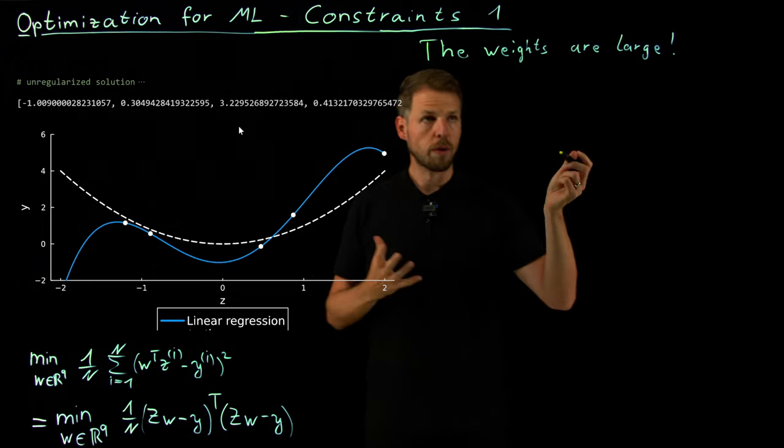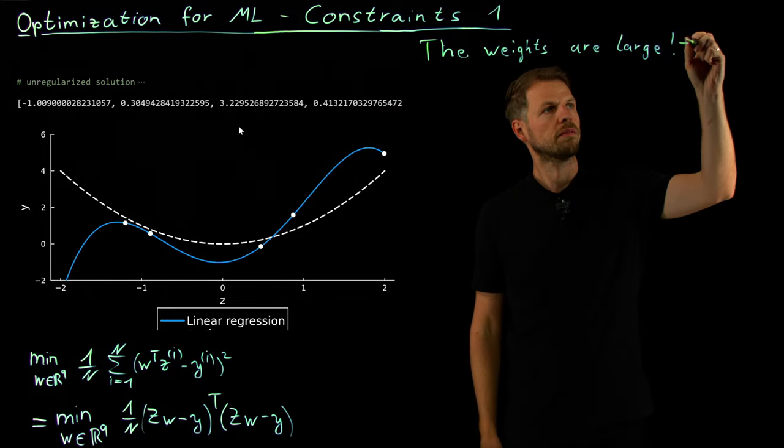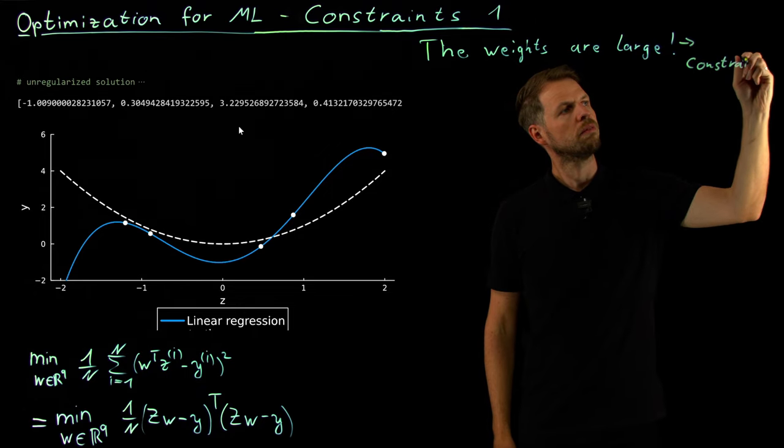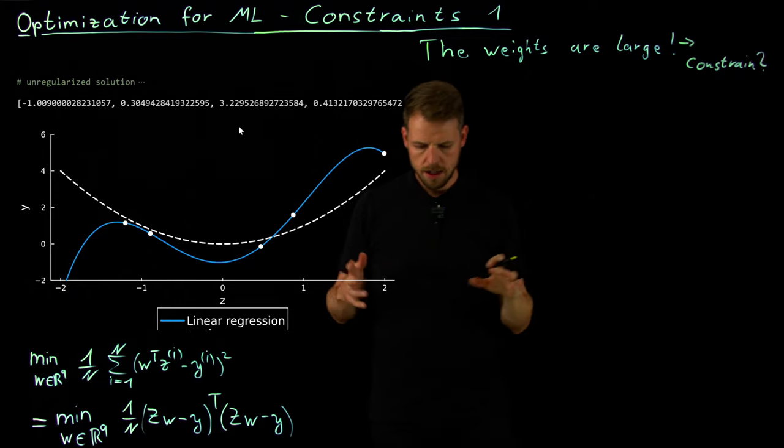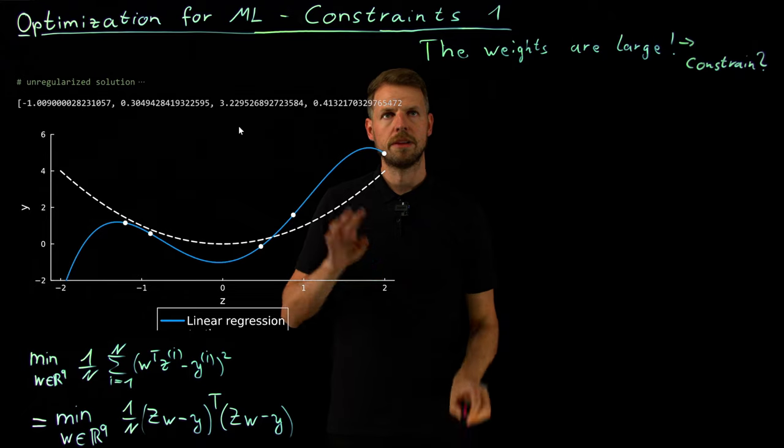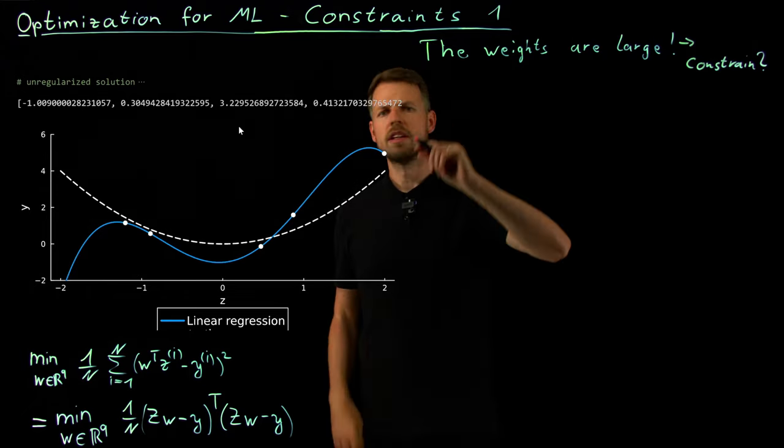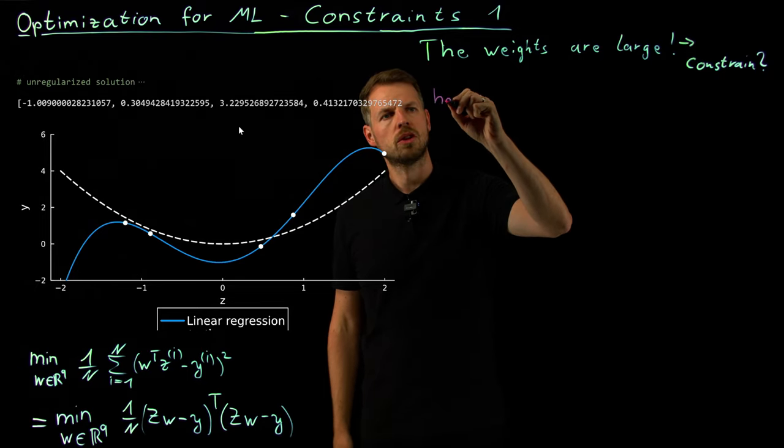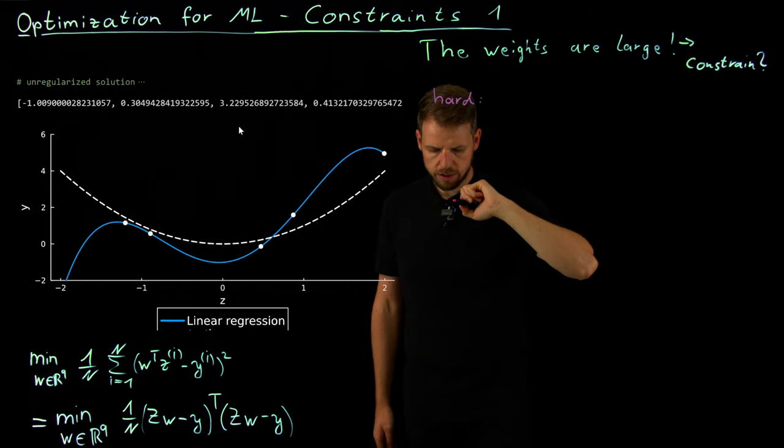And this is what gives us here these very problematic behavior out of our sample set. And so the question is, can we solve this by constraining it? Can I put some sort of budget on my weights and say this is allowed and furthermore I'm not allowing you to do this? So there's different ways to try this out.